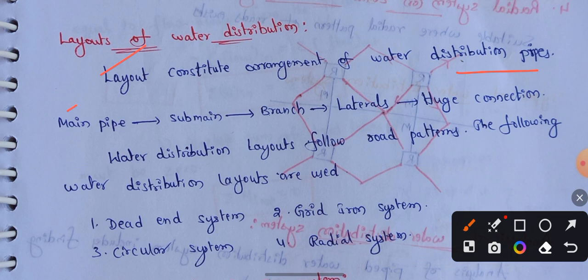We can see distribution pipes consist of: first, main pipes; sub-mains; branches; laterals; and house connections.